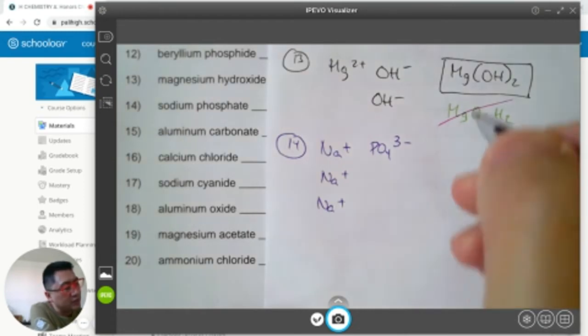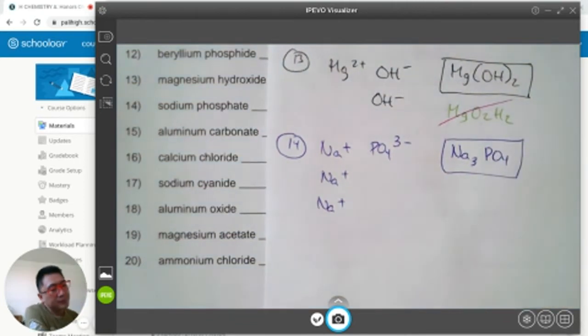One phosphate, that's negative 3. The correct formula of sodium phosphate is Na3PO4. I don't need to put a parenthesis around the phosphate, as there's only one. It's like you don't have to write 1x plus 1y. Usually we don't write ones.